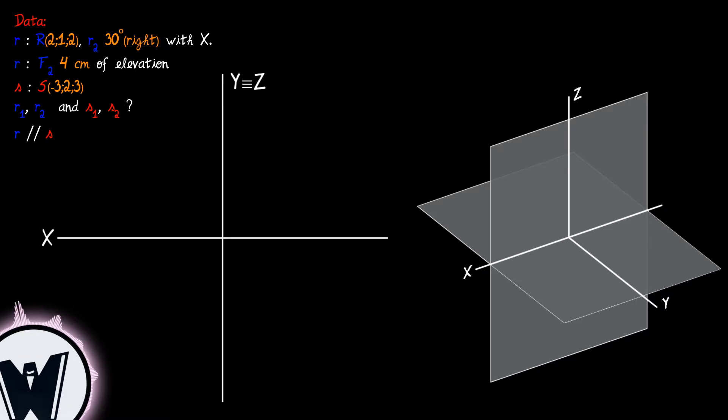To a better view we will hide the profile plane leaving only the Y and Z axis and we can now represent the coordinates of our point R: 2 for abscissa, 1 for the ordinate or distance, and 2 for elevation.